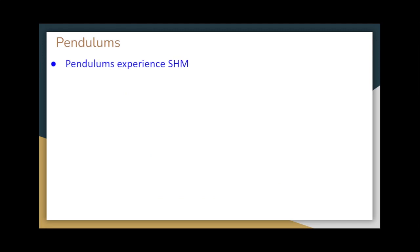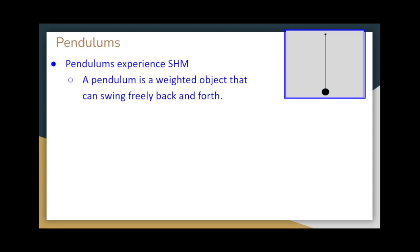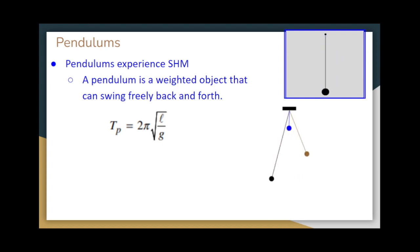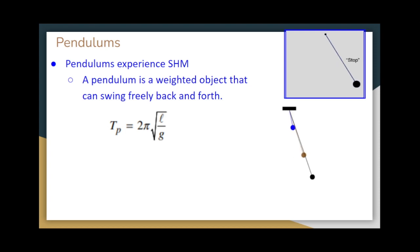Let's take a look at pendulums. Pendulums experience simple harmonic motion — a pendulum is a weighted object that can swing freely back and forth, kind of like Miley Cyrus's wrecking ball. The equation for the period of a pendulum is T_p equals 2 pi times the square root of L over g. Looking at a GIF of pendulums of different lengths, we can see that the blue pendulum with the shortest length has the smallest period, the brown pendulum with medium length has a medium period, and the black pendulum with the longest length has the longest period.